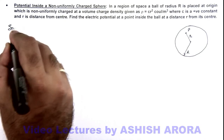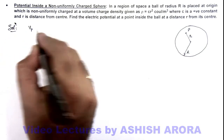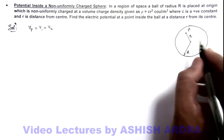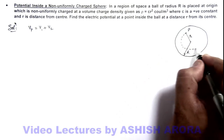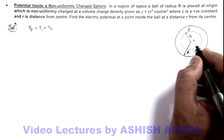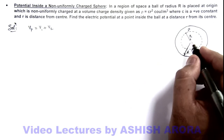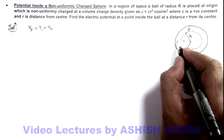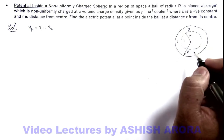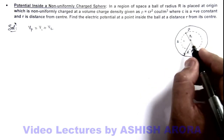In this solution we calculate the potential at point P due to two regions: V1 and V2. V1 is the potential due to the inner sphere at point P, which is considered to be a sphere of radius small r on whose surface P lies. The second region is the outer shell from point P to the outer surface of the ball. We calculate the potential at P due to these two regions and add the two results.